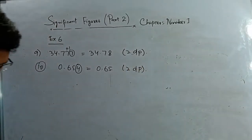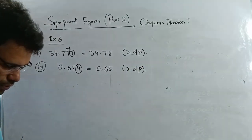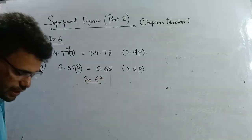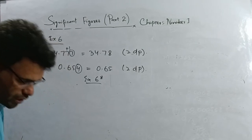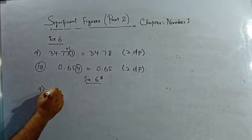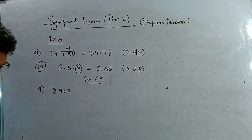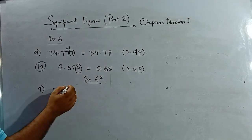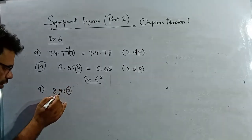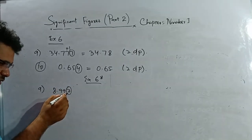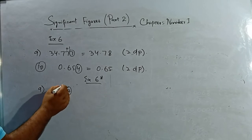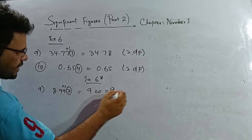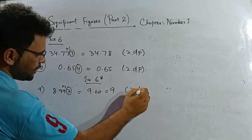Exercise 6 star, question number 9: 8.997, write corrected to two decimal places. One, two — check the third decimal place, which is 7. It is greater than five, so I add one. Once I add one I get 9.00. That is the answer to two decimal places.